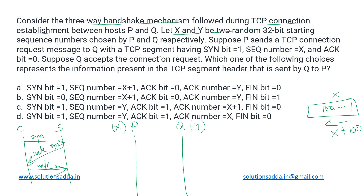In this question, P is sending a TCP connection request message to Q, so the connection is being initialized from P's side towards Q. P sends a packet with SYN bit equal to 1 to initialize the connection. This is called an active connection on P's side, and on Q's side it will be passive.